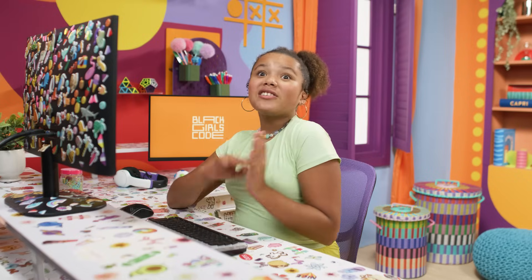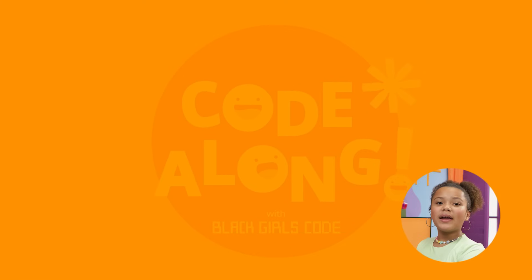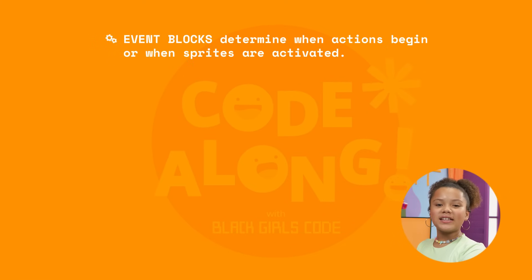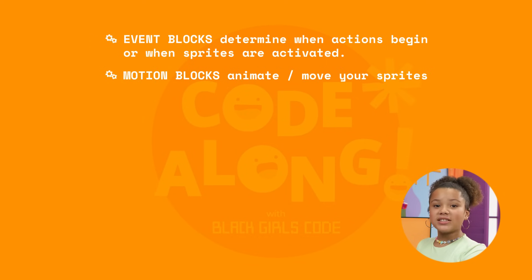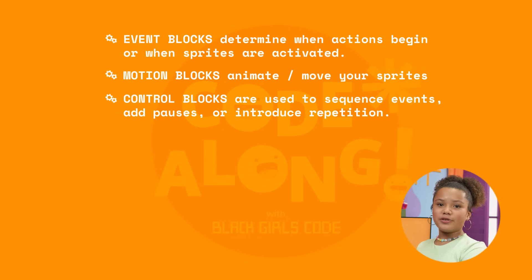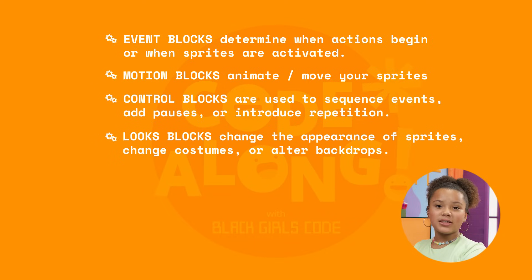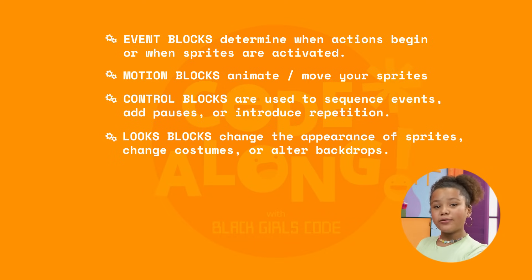We learned so many things in this video. Let's review. To create movement in Scratch, start by using the event blocks to determine when your actions begin or when the characters get activated. Use motion blocks to animate your sprites and make them move. Use control blocks to help you sequence events, add pauses, or introduce repetition. Use looks blocks to change the appearance of sprites, allowing change of costumes or altering the backdrop, enriching the visual narrative of your story.